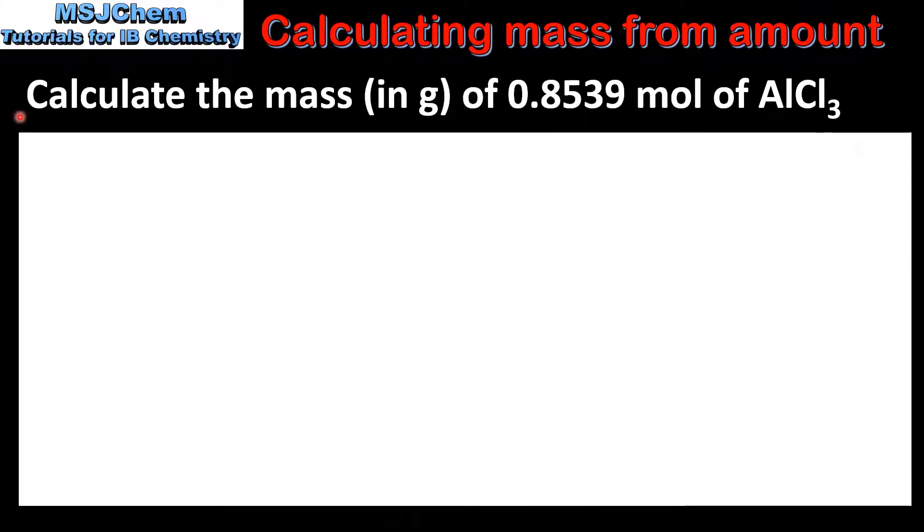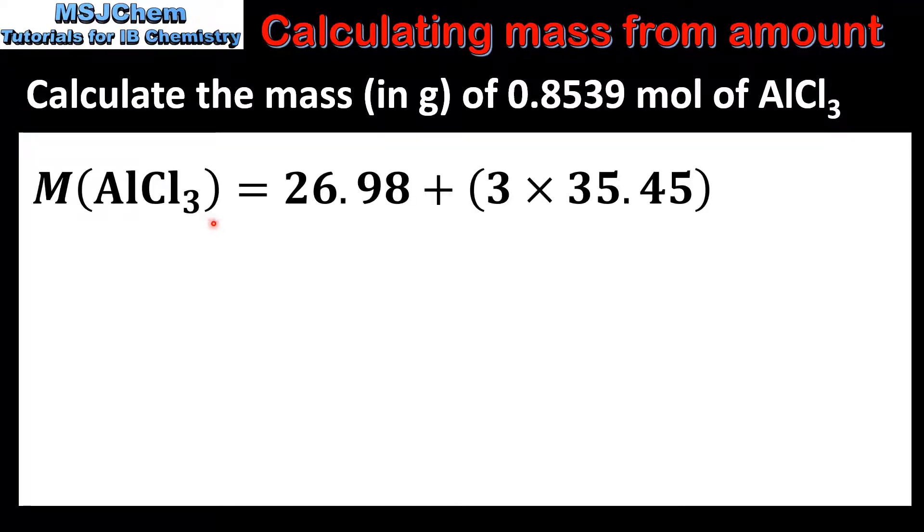In the next example we'll calculate the mass in grams of 0.8539 moles of aluminium chloride. So we'll start by determining the molar mass.